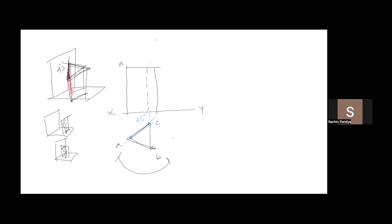This is where people get confused about dotted lines. Remember: we are doing first quadrant. In the first quadrant, the observer is away from the object. The observer is here, watching from the front — he can see A and B, but not C. That's why C is dotted. Height is 45mm and base side is 30mm. This is how we draw this sum. Six sums are done.